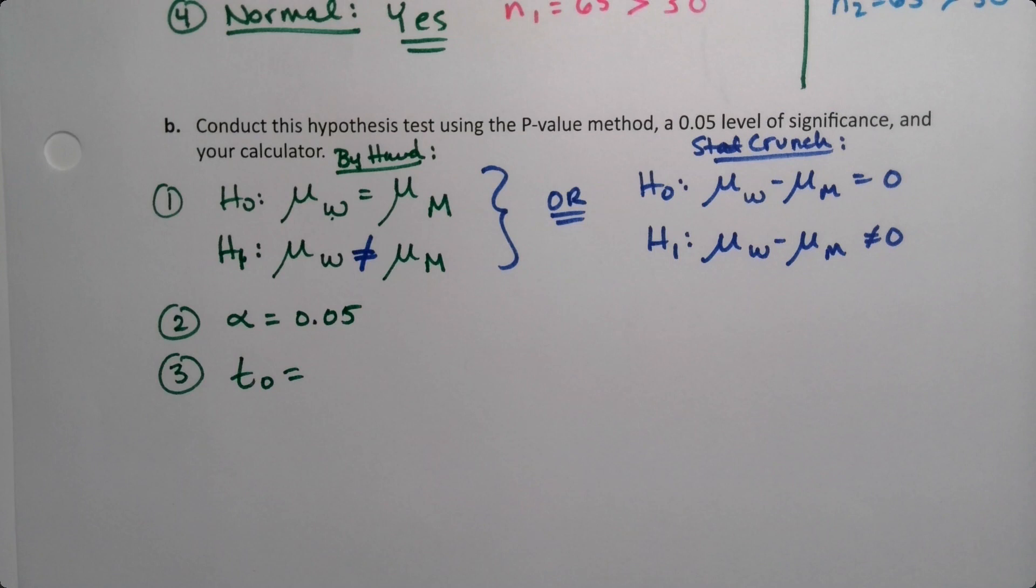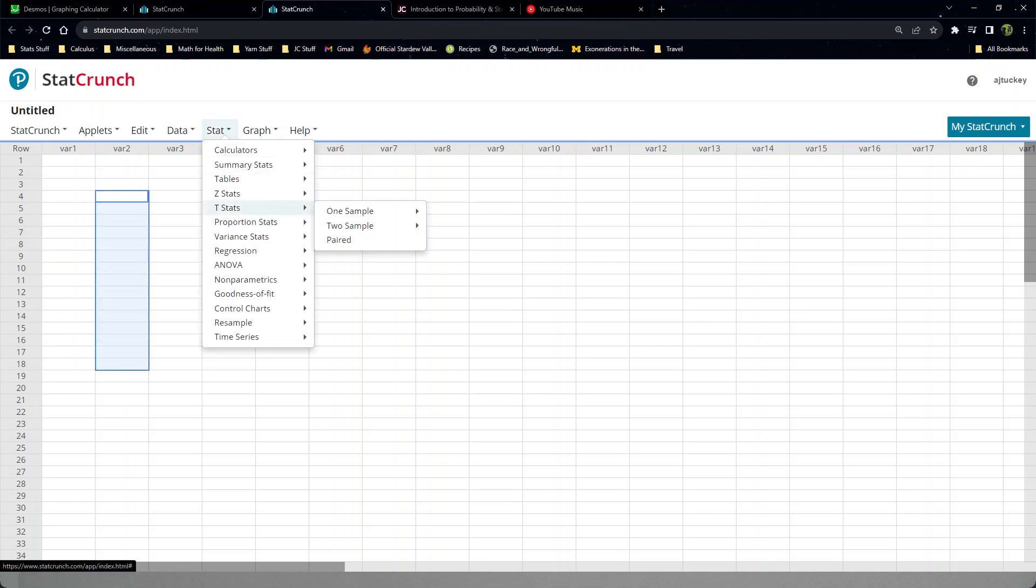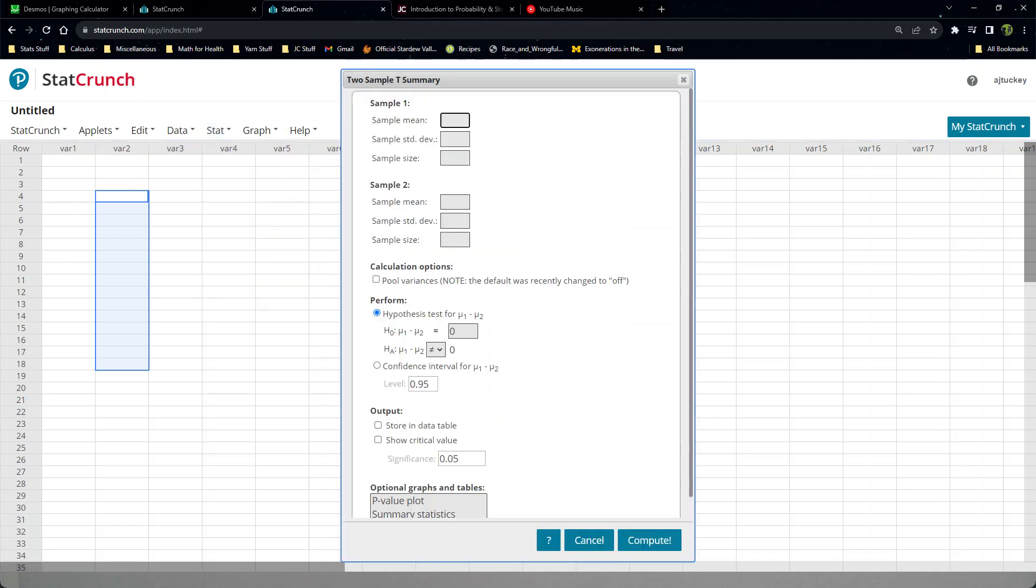I don't have raw data here, so I'm going to have to do With Summary. Here I am at StatCrunch. There's no columns of data, I don't have 65 numbers here, so I'm going to do Stat, T Stat, Two Sample, With Summary. I don't have raw data. I have to type in the values I have. Group one was the women, so that was 98.394, 0.743, and the sample size was 65. X bar, S, and n. Then I do it for the men: 98.105, 0.699, and 65 for the men as well. They don't have to be the same, by the way; this one just was.